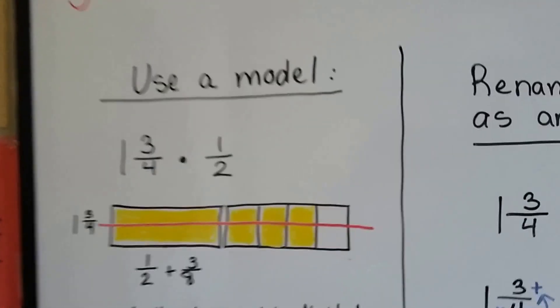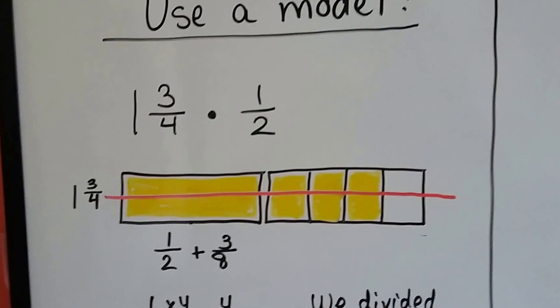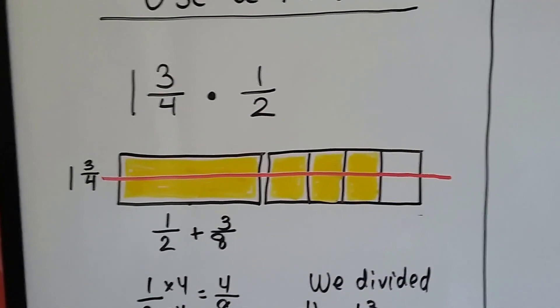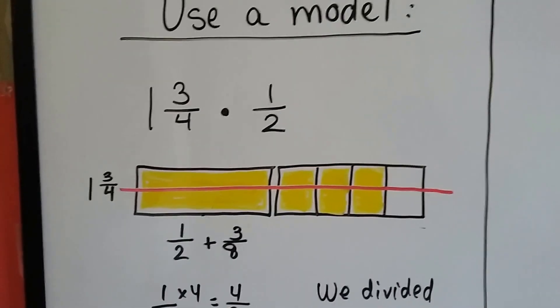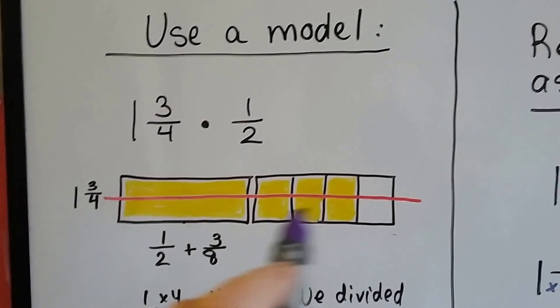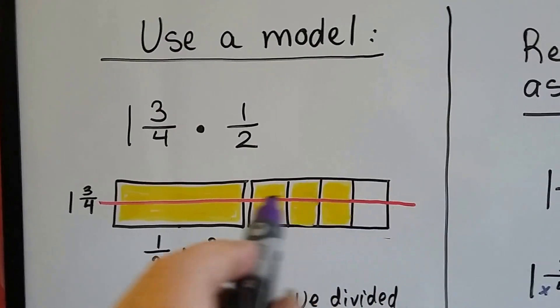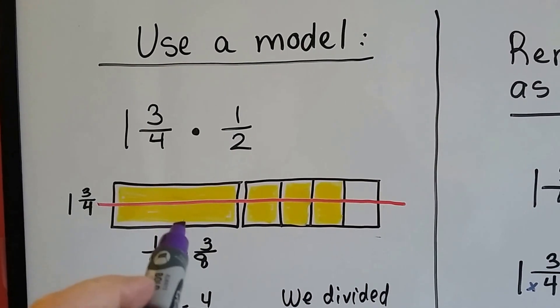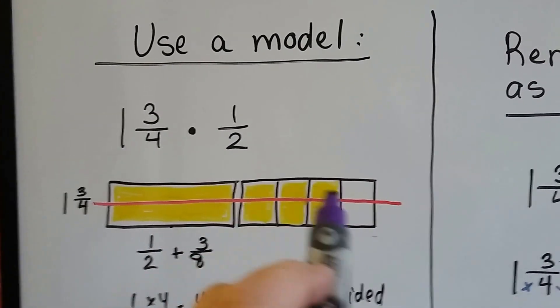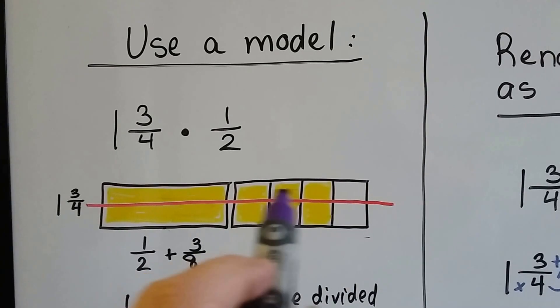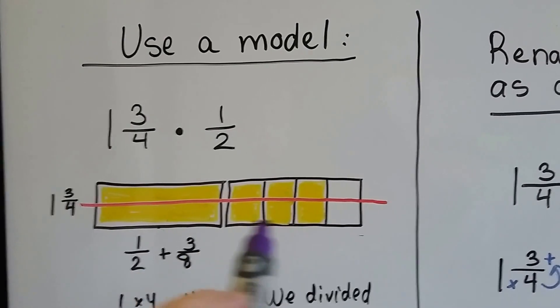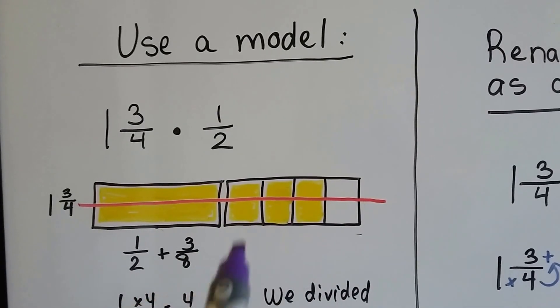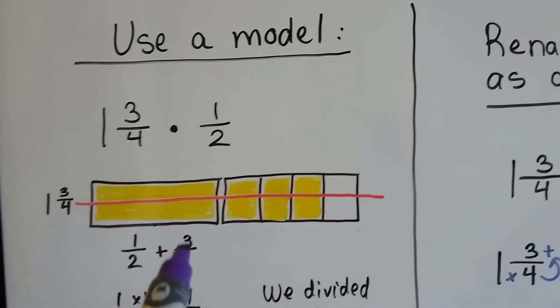We can use a model to multiply 1 and 3 fourths by a half. We can actually draw a model of 1 and 3 fourths and just cut it in half. We know that this is half of the whole one, and cutting it in half turned these 3 fourths into eighths that we have 3 of. So we can add 1 half plus 3 eighths.